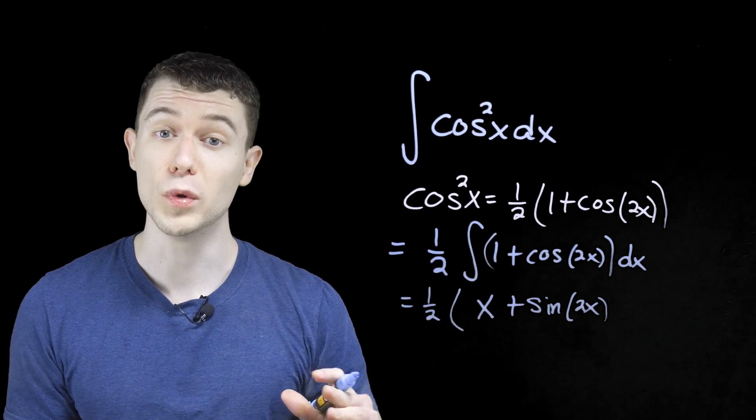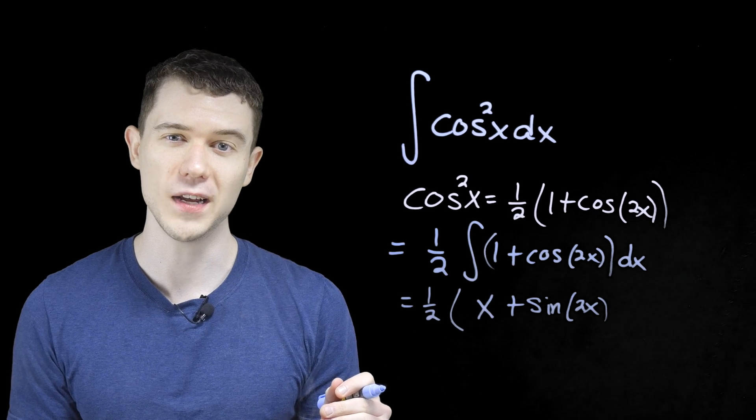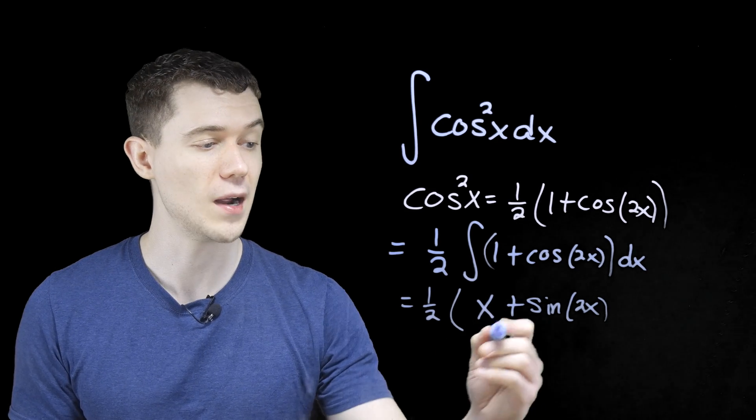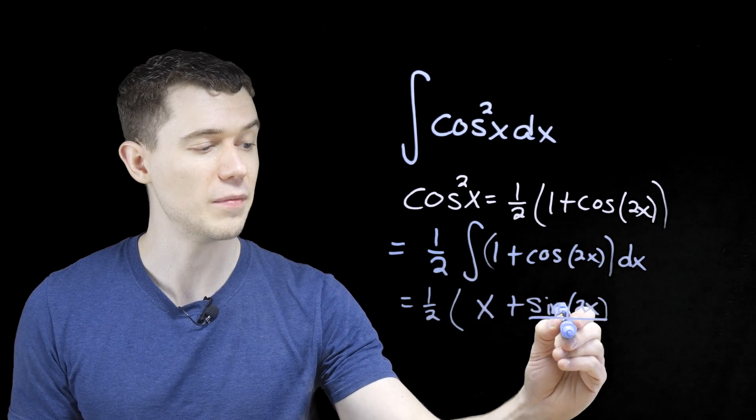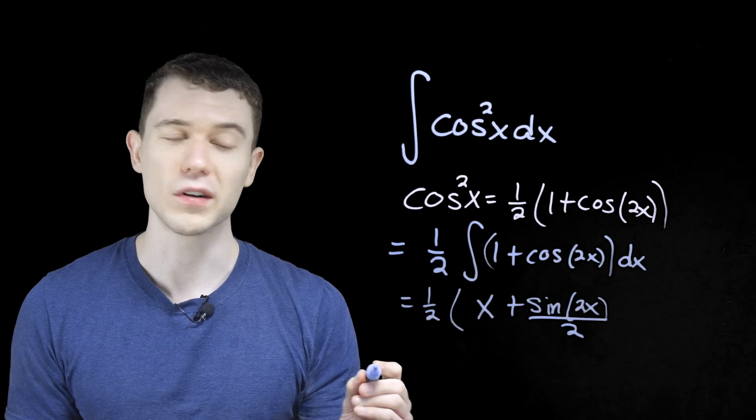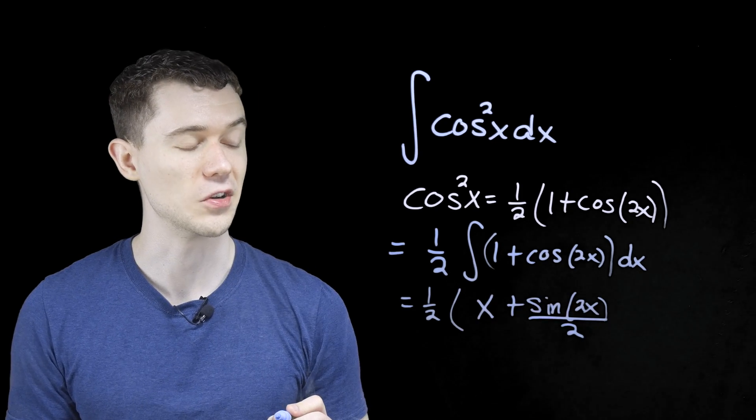If we were deriving, we would have to multiply by 2 by the chain rule. We're antideriving. We need to divide by that 2. That only works when it's a constant times x on the inside.